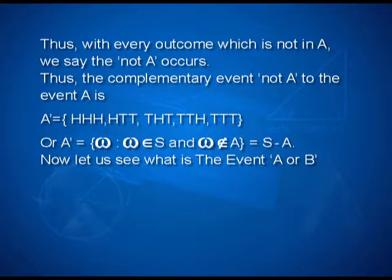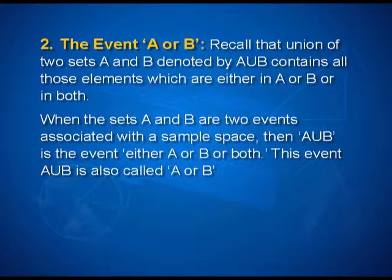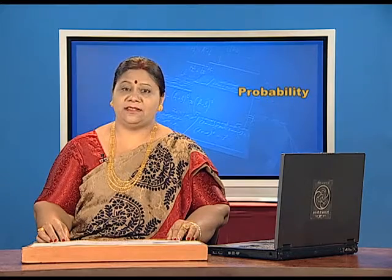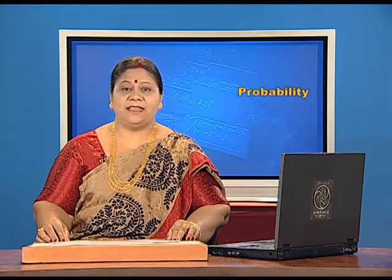Now let us see what is the event A or B. Recall that the union of two sets A and B, denoted by A union B, contains all those elements which are either in A or in B or in both. When A and B are two events associated with a sample space, then A union B is the event 'either A or B or both'. The event A union B is also called A or B. So students, in this session we discussed about events, occurrence of events, and types of events. We shall discuss about the algebra of events in the next session. Thank you.